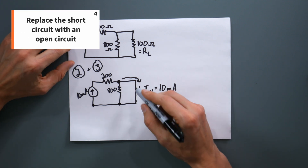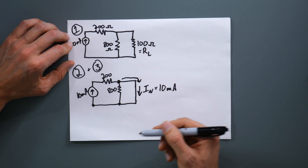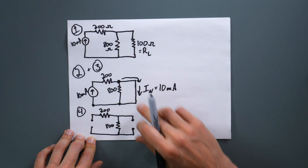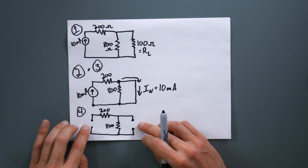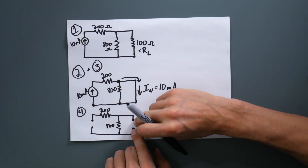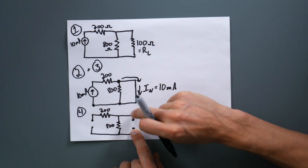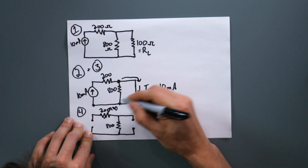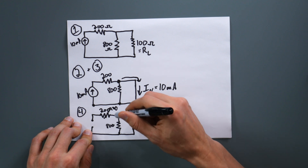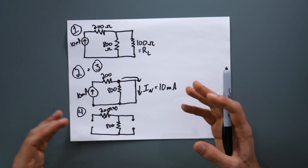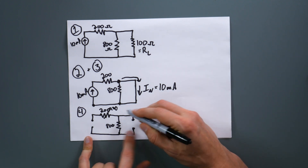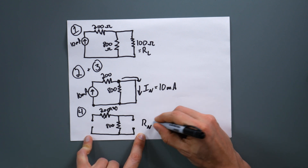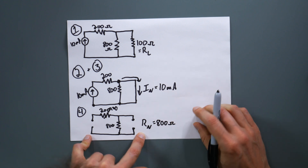Step four: take this spot and replace it with an open circuit so we can find the equivalent resistance. I've drawn out the circuit, turned that short circuit into an open circuit, and taken my current source and turned it into an open circuit. My goal is to see what the resistance is between these two nodes. This open circuit makes the 200 ohms go to infinity — so it's basically 800 ohms in parallel with infinite ohms, which gives you 800 ohms. Our Norton equivalent resistance is 800 ohms, since that one resistor was completely taken out of the equation.